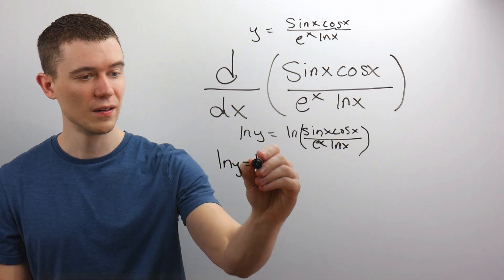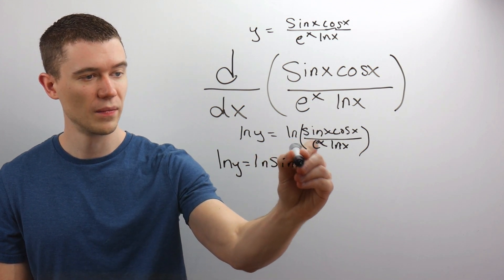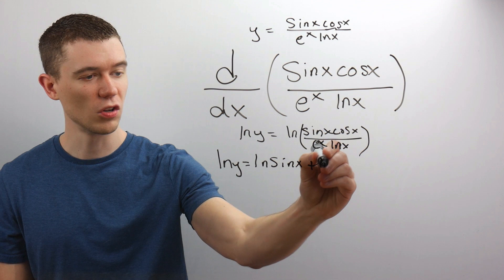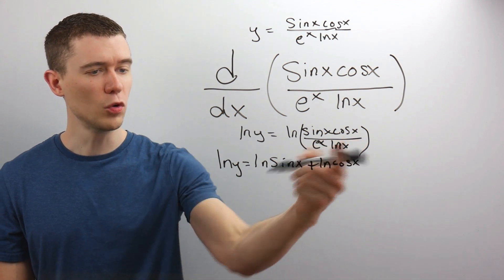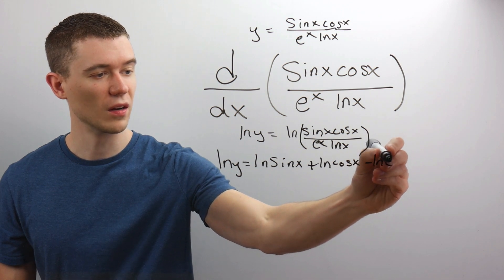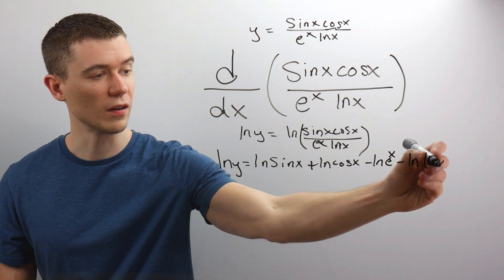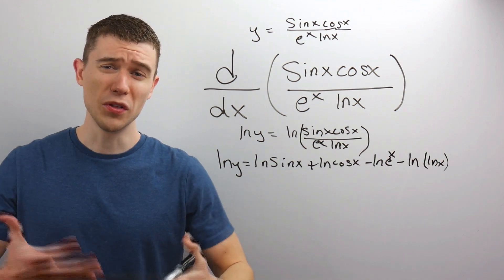This would really mean natural log of sine plus natural log cosine. And then the ones on the bottom, those get subtracted. So minus a natural log e to the x and a minus a natural log of a natural log of x. Why have I done this? Well, this way,